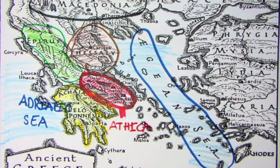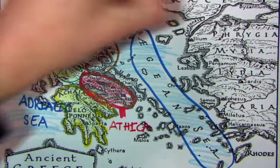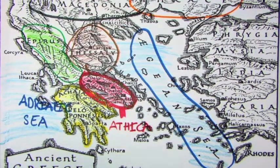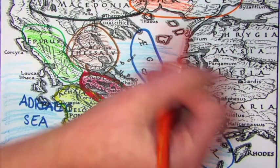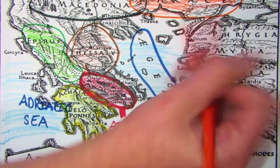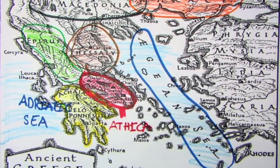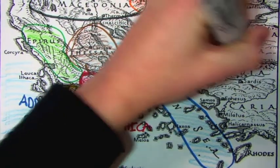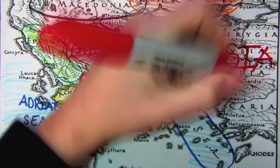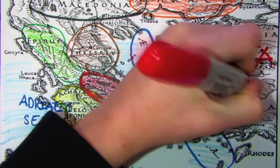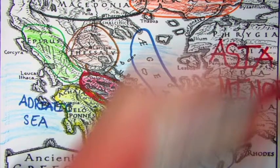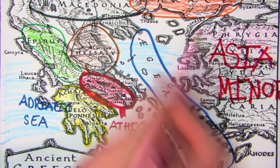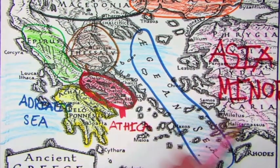And east of that is Thrace, in orange. And south of that is Crete, in purple.